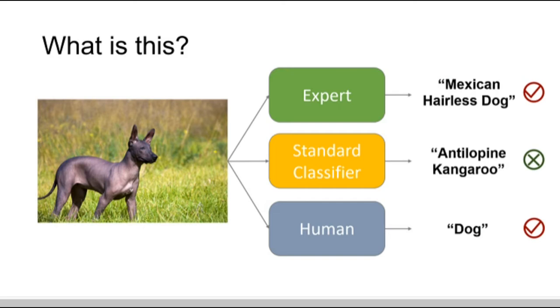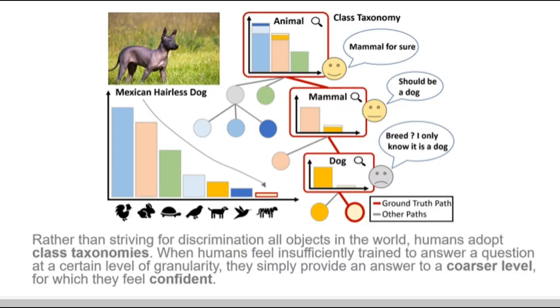Humans can provide a less-specific but correct answer instead of predicting a wrong answer as standard classifiers. This is because humans adopt class taxonomies, and they have the ability to change the problem.